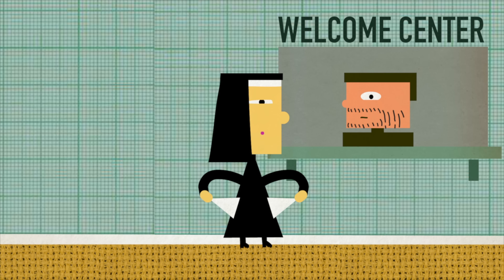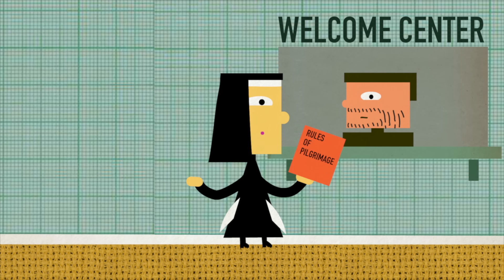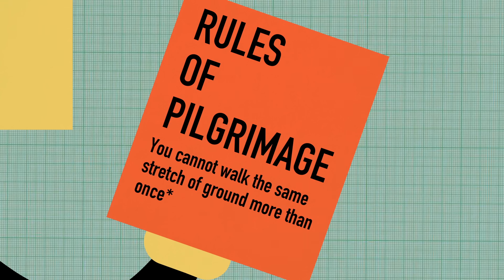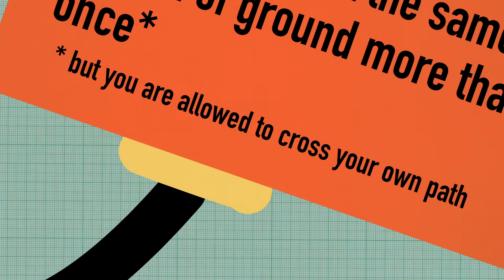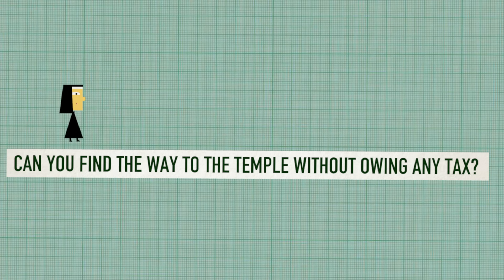As a pilgrim, you carry no money and have no way of earning any. What's more, the rules of your pilgrimage forbid you from walking over any stretch of ground more than once during your journey, though you can cross your own path. Can you figure out a way to reach the temple without owing any tax, or walking the same block twice in any direction?